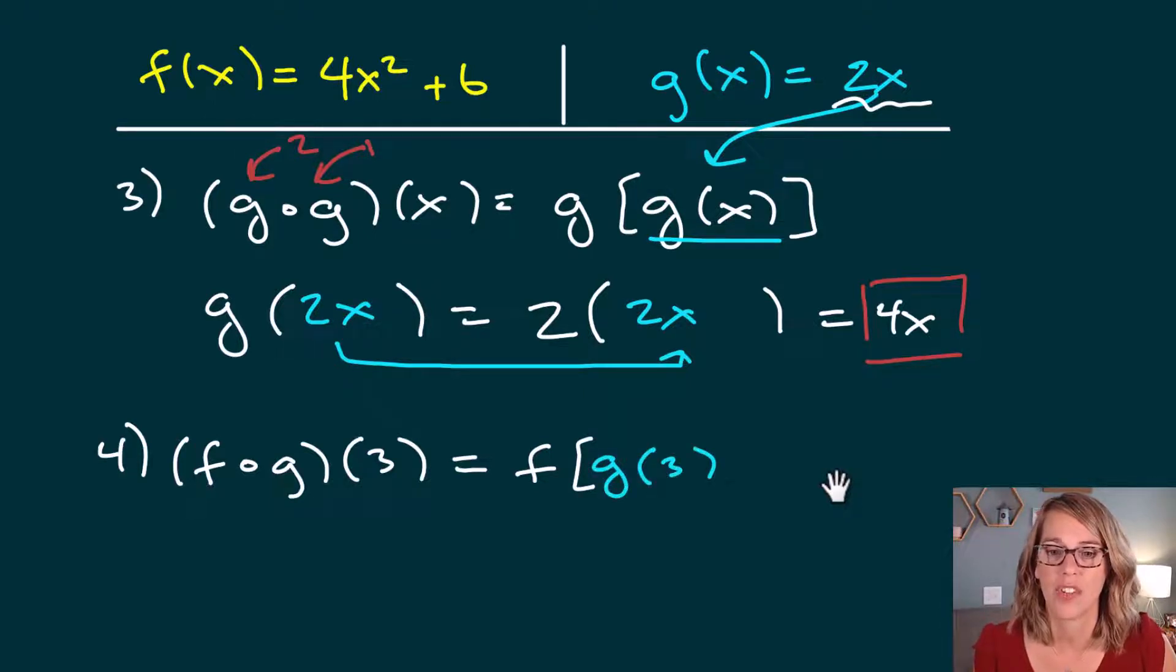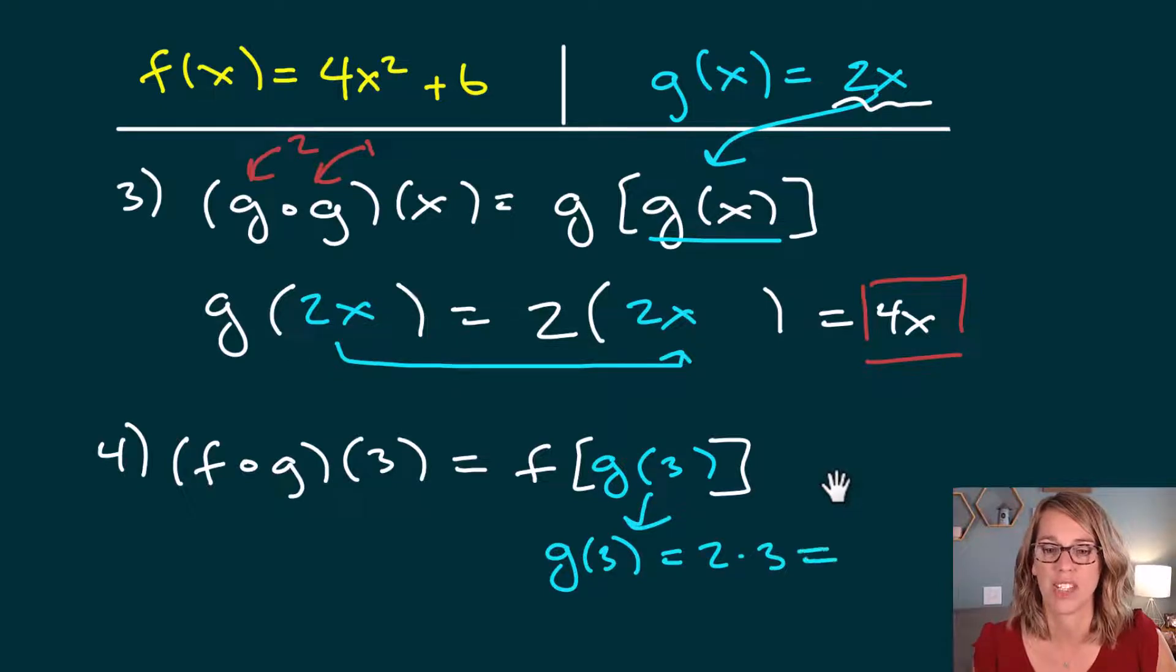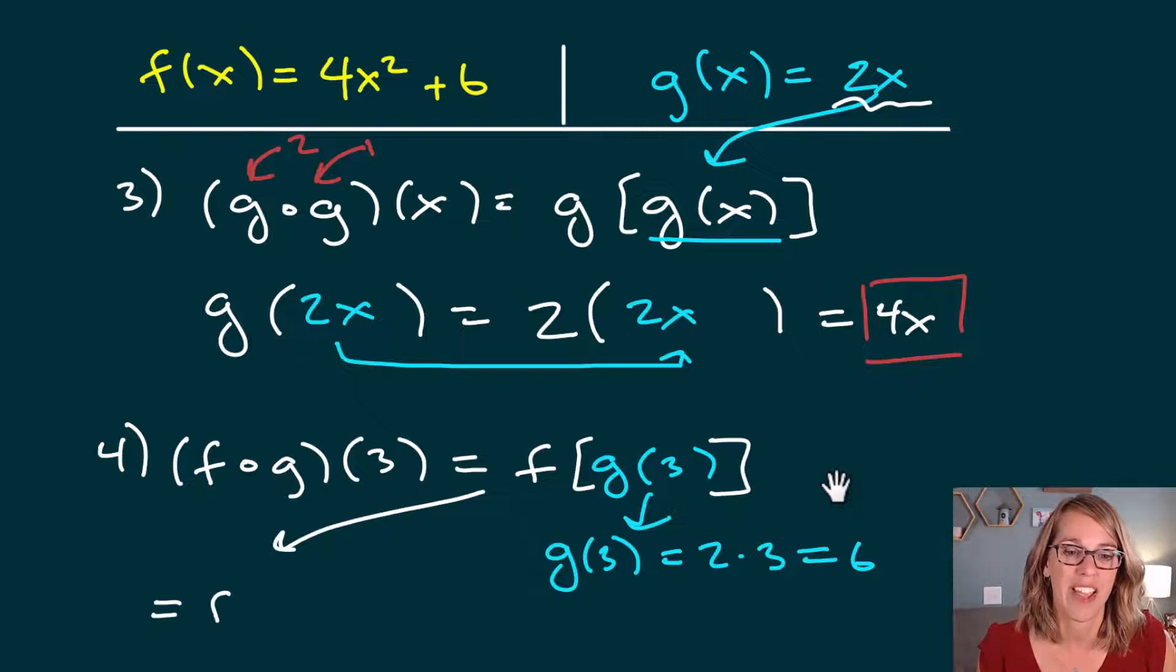Well, I can figure out what g of 3 is. I know that g of x is 2 times whatever my number is. So I know that g of 3 is equal to 2 times 3. So 2 times 3 is equal to 6. So I can rewrite my composition here. This is going to be f of g of 3, but I just found out that g of 3 is equal to 6.